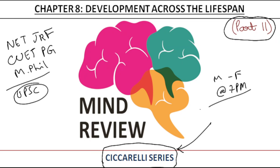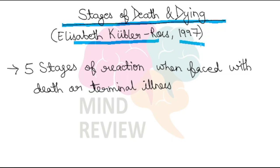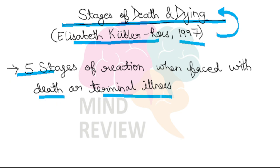So let's start with today's topic: the Stages of Death and Dying, given by Elizabeth Kübler-Ross. A lot of people think Kübler and Ross are two different names — no, it is one name: Elizabeth Kübler-Ross. In 1997, she described five stages of reaction when faced with death or a terminal illness — an illness for which there is no cure and the end result is unfortunately death.